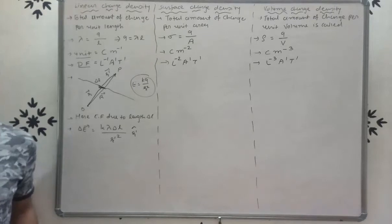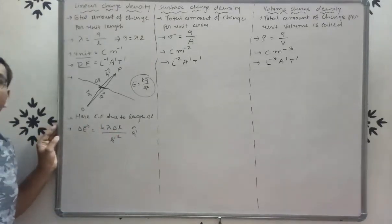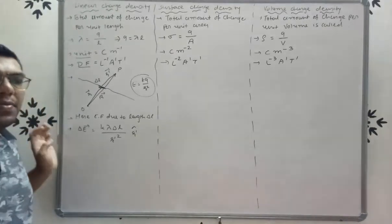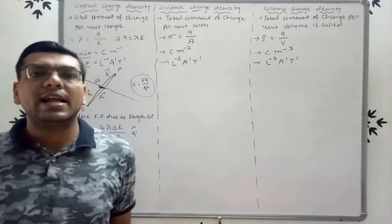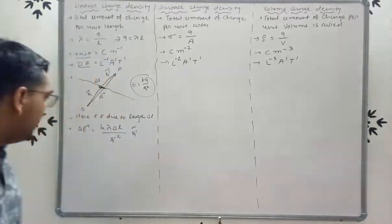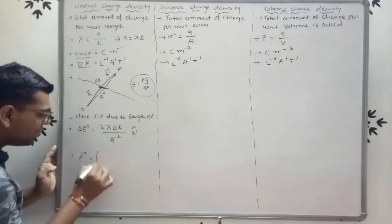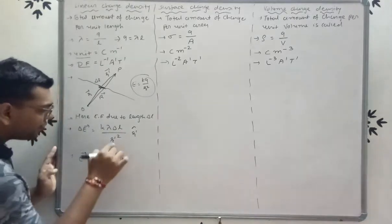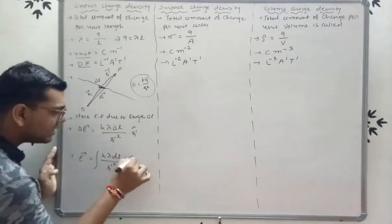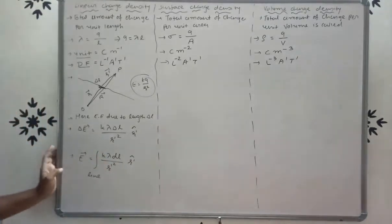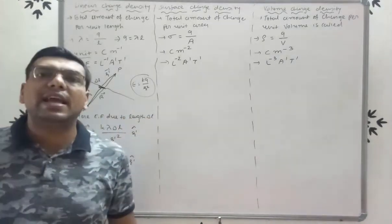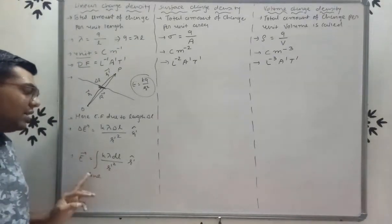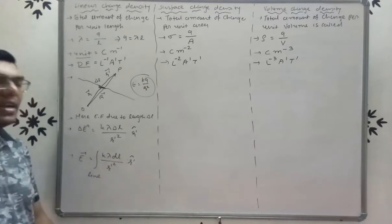This is the electric field due to the small element of length δL. To find the total electric field, we take the integration: E = ∫ K·λ·dL / R'² · R̂'. This is a line integral because we distribute charge on a line of length L.